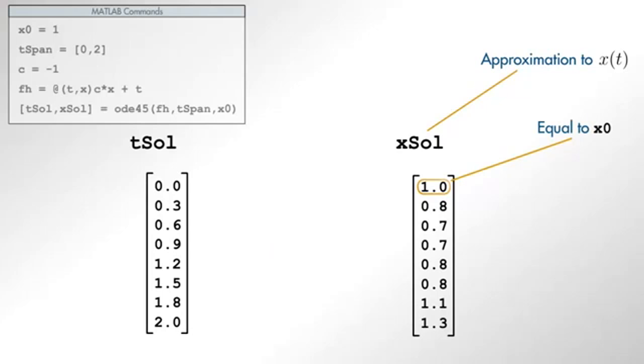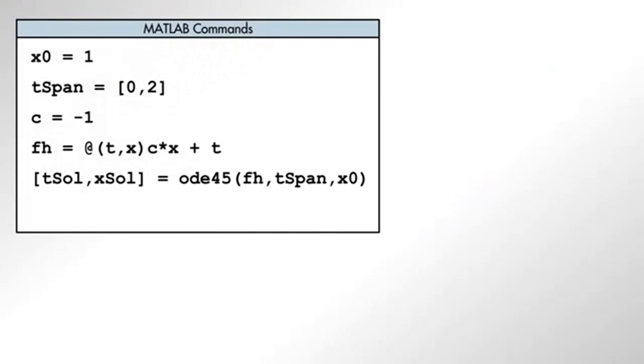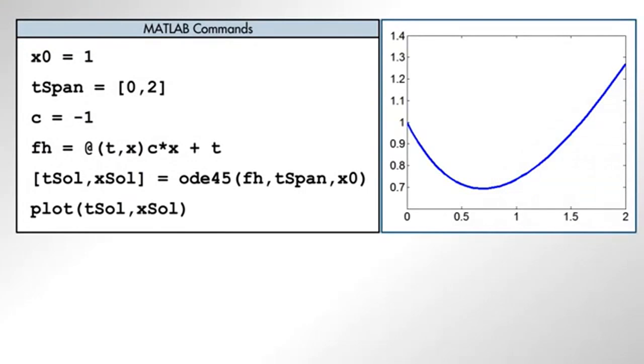We can visualize the output using the plot function to better understand the system. We see that the horizontal axis represents the interval where the solution is computed. Also, we notice that the curve representing the solution begins at the value specified by the initial condition.